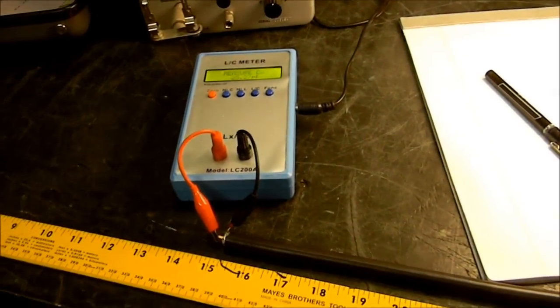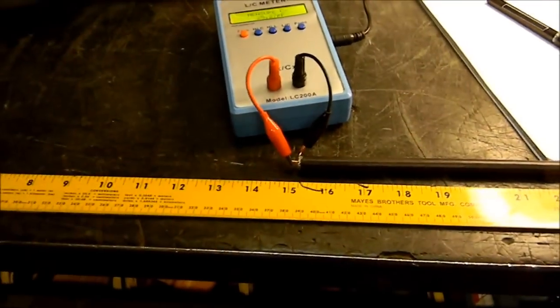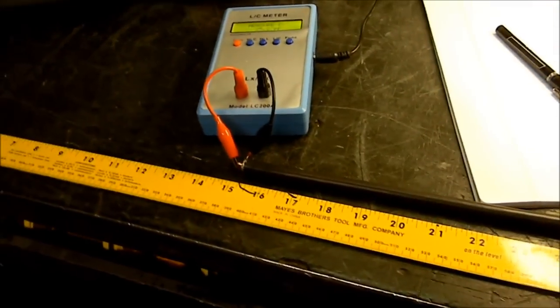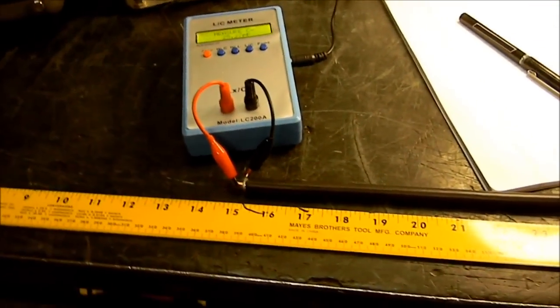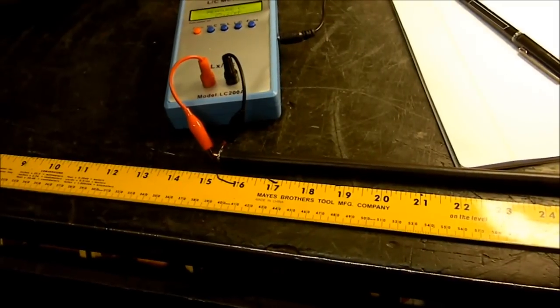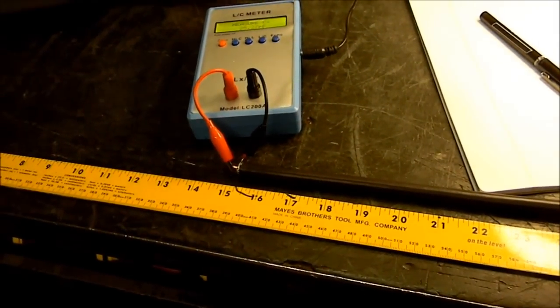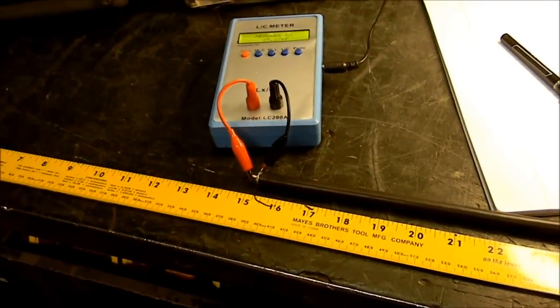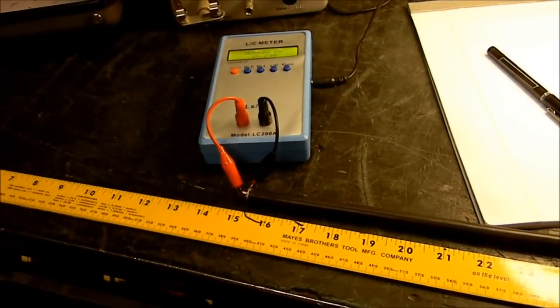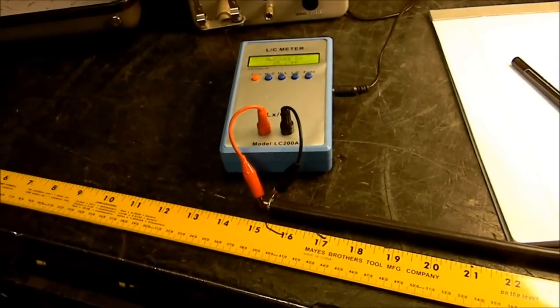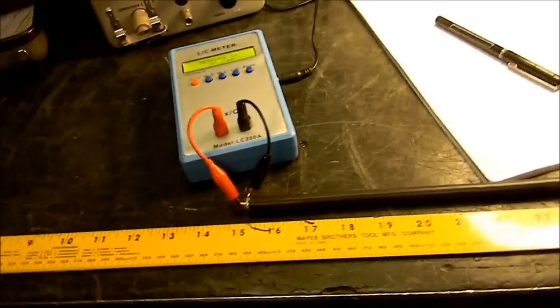Tonight I have chosen to document the building of a choke balun, as it's known, although it is not a balun, for use at the end of a coaxial transmission line into a G5RV antenna, in particular on 20 meters.